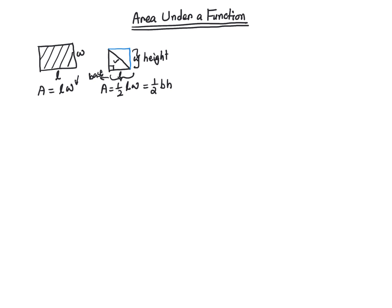What if you have a triangle that's not so nicely shaped? In that case, I consider a base, then extend the line, look at the angle opposite to the base, and from that vertex draw a vertical line to the base — that is the height. So now I have the base and the height for a triangle that is not a right triangle, and I can use the same formula. As it turns out, it works.